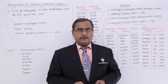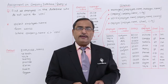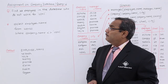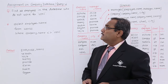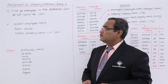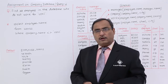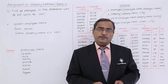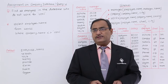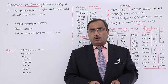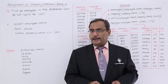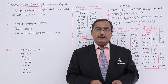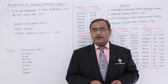Query number 6. What is query number 6 here? Find all employees in the database who do not work for VSNL. That means I am supposed to list only those employee names who are not working for the company VSNL.